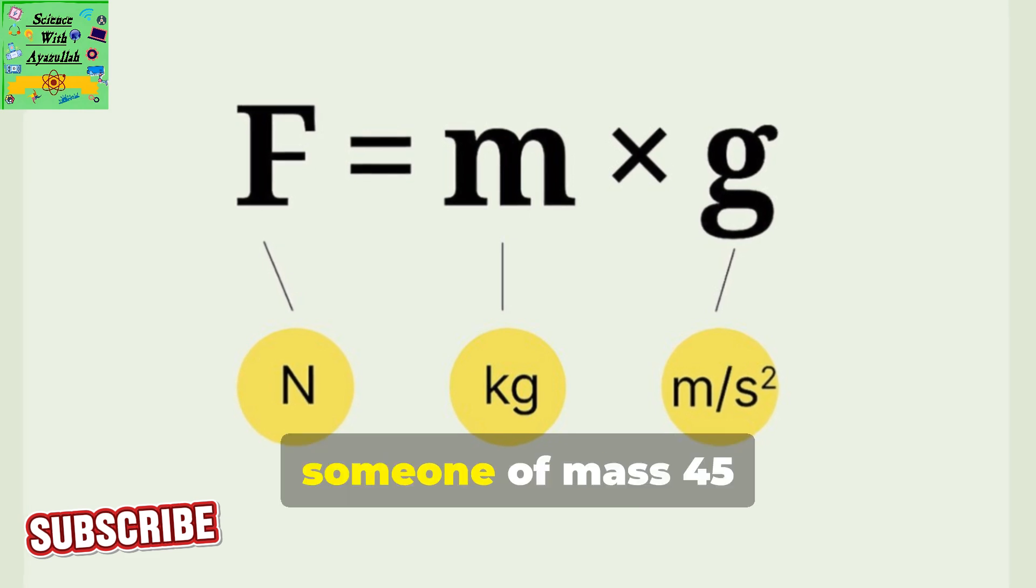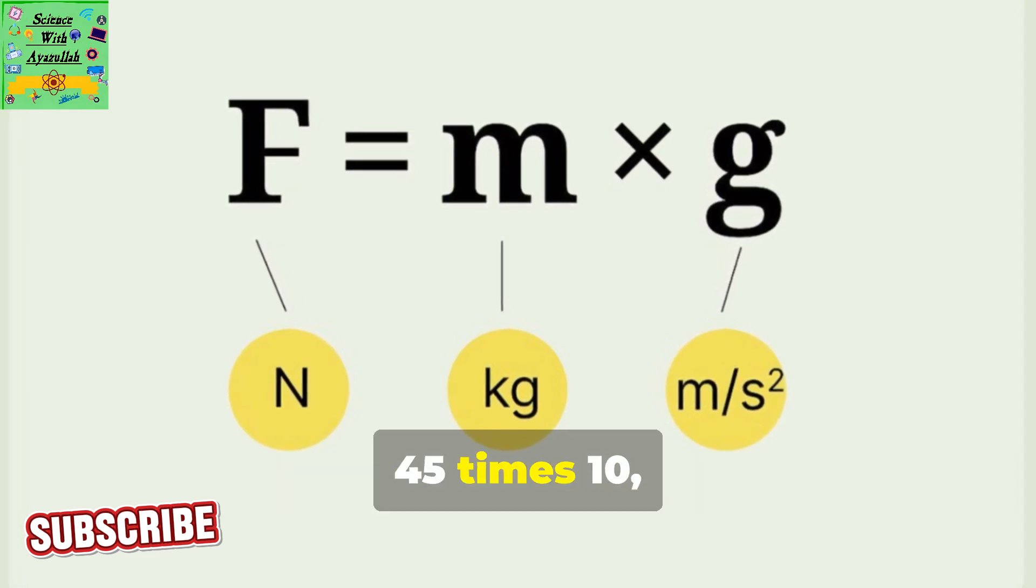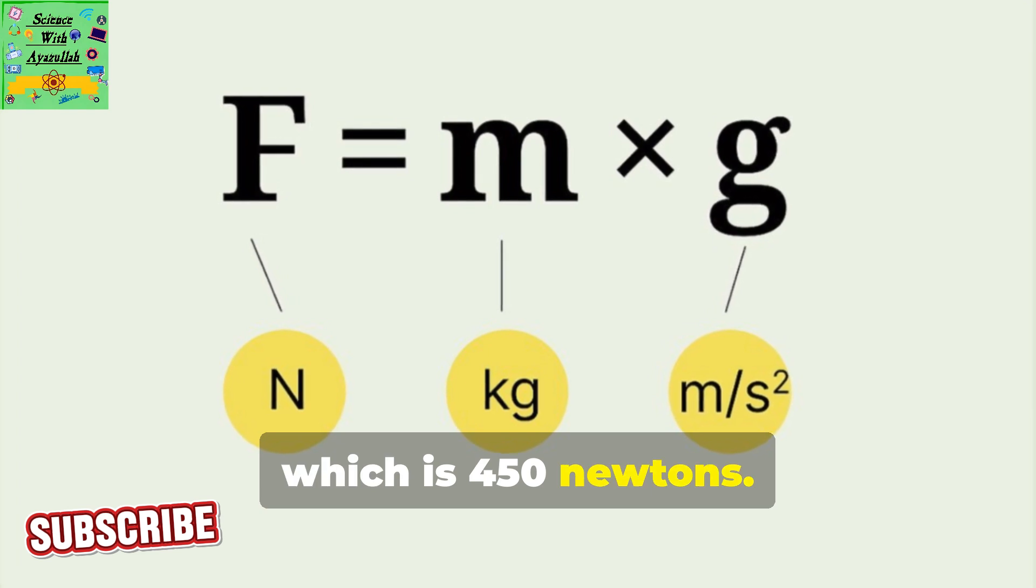For example, someone of mass 45 kilograms has weight 45 times 10, which is 450 newtons.